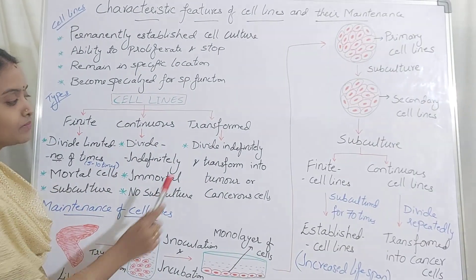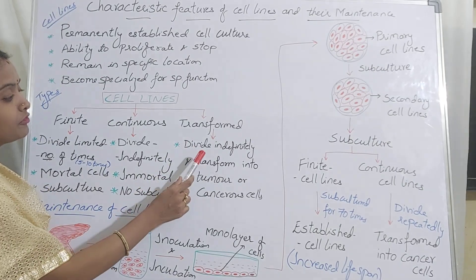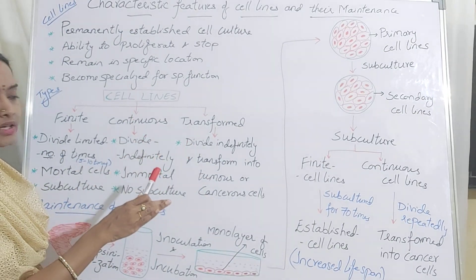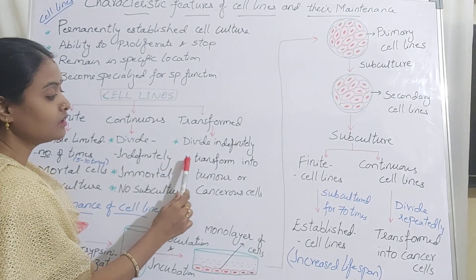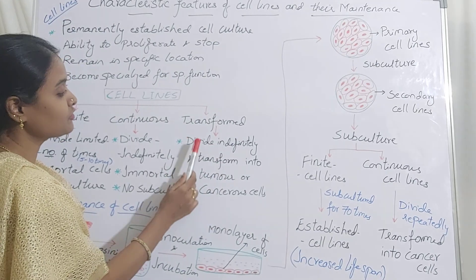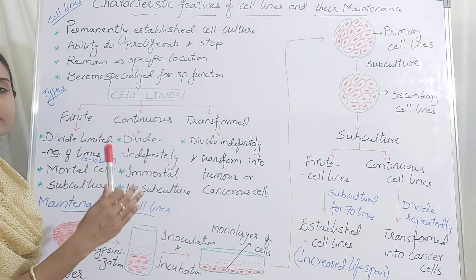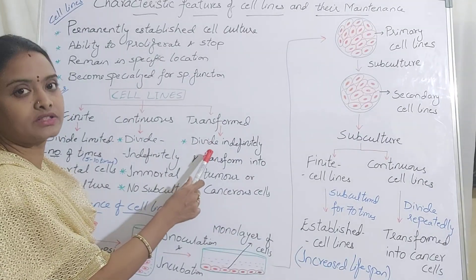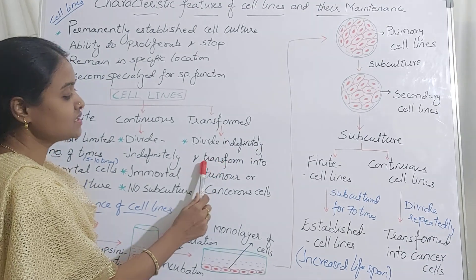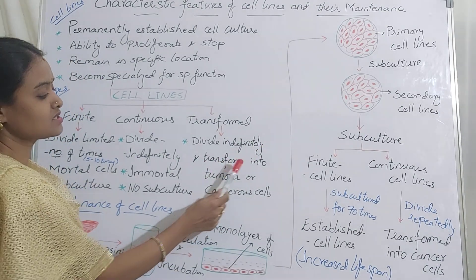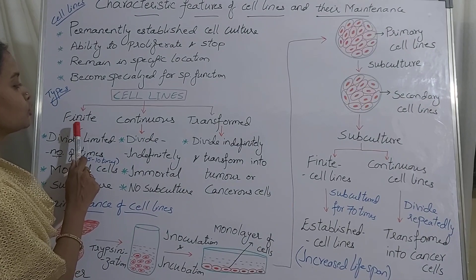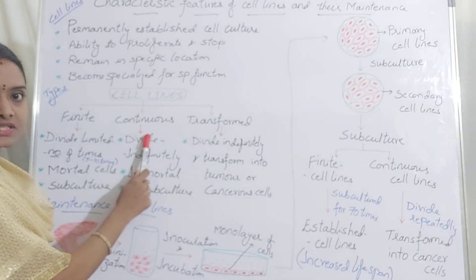Coming to the transformed cells — these cells also divide indefinitely. That means they don't have any limited life. They divide indefinitely and gradually they transform into tumor cells or cancer cells. When dividing continuously or indefinitely, they undergo certain genetic changes because of which transformation occurs. These transformations result in new characters, and as a result they transform into tumor cells or cancer cells. So you have finite cells, continuous cells, and transformed cells.